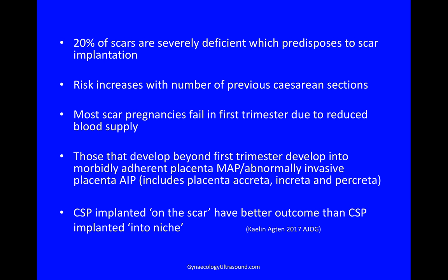Those that develop beyond the first trimester will develop into a morbidly adherent placenta — MAP, or Abnormally Invasive Placenta, AIP — a definition which includes placenta accreta, increta, and percreta.